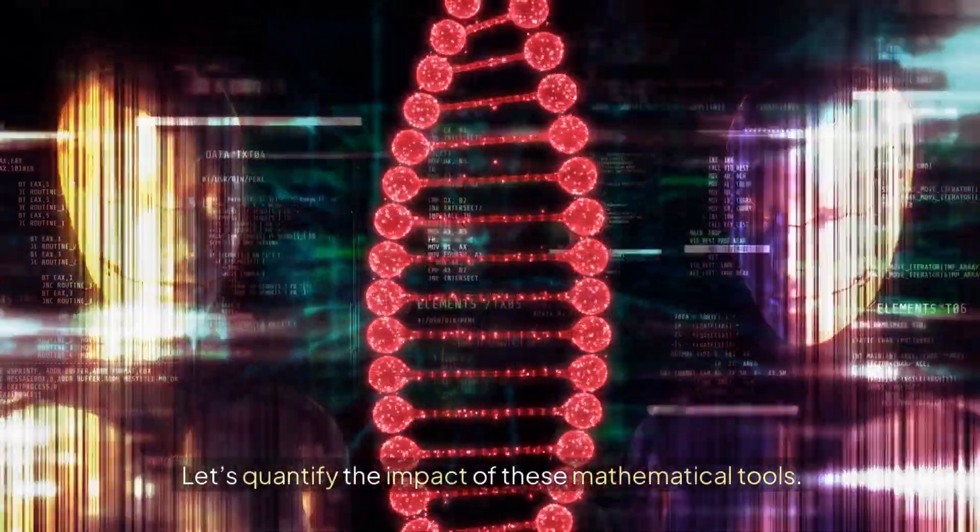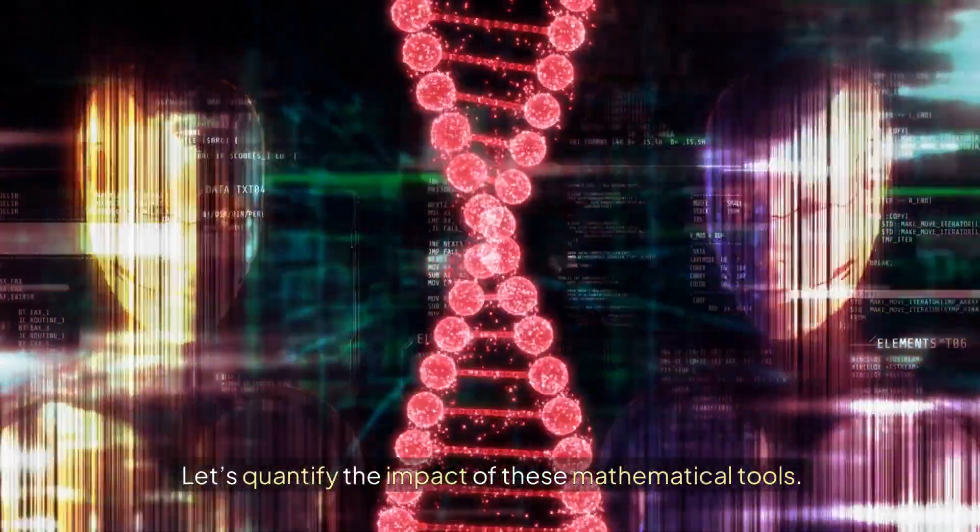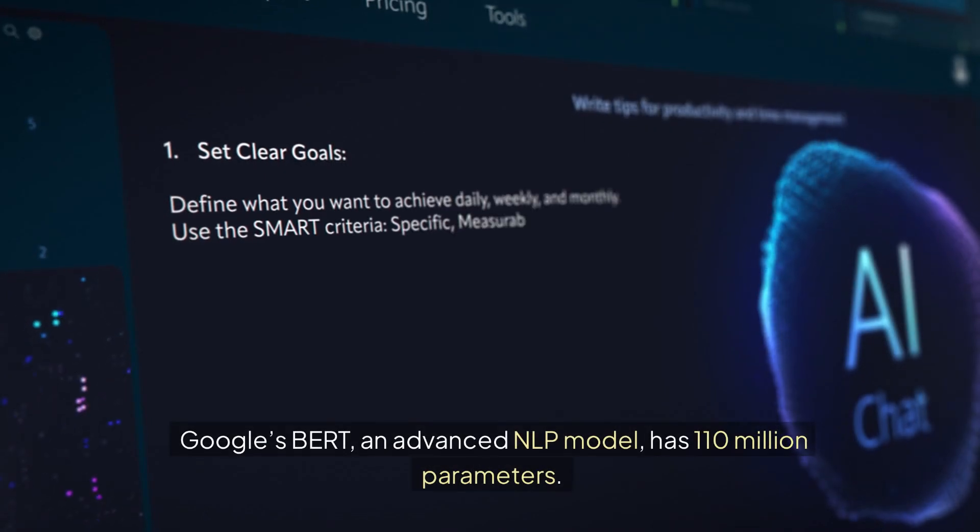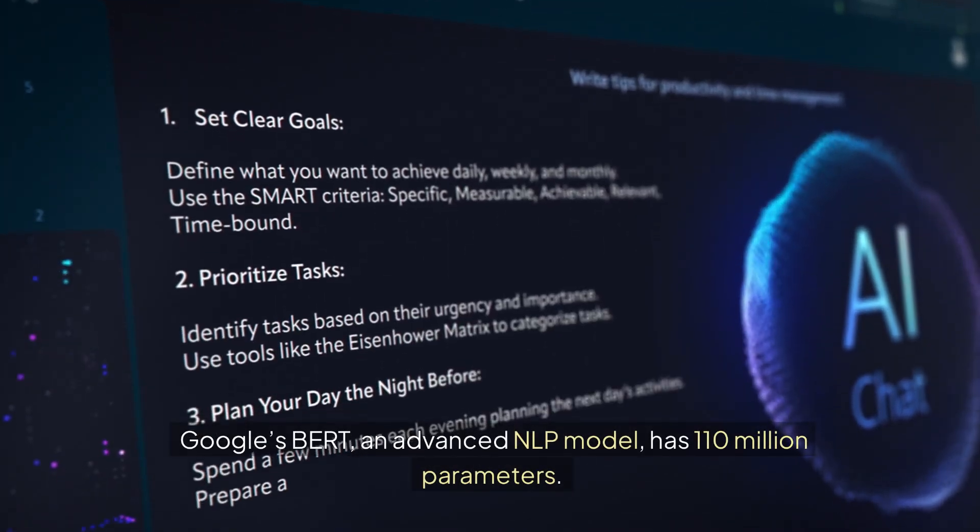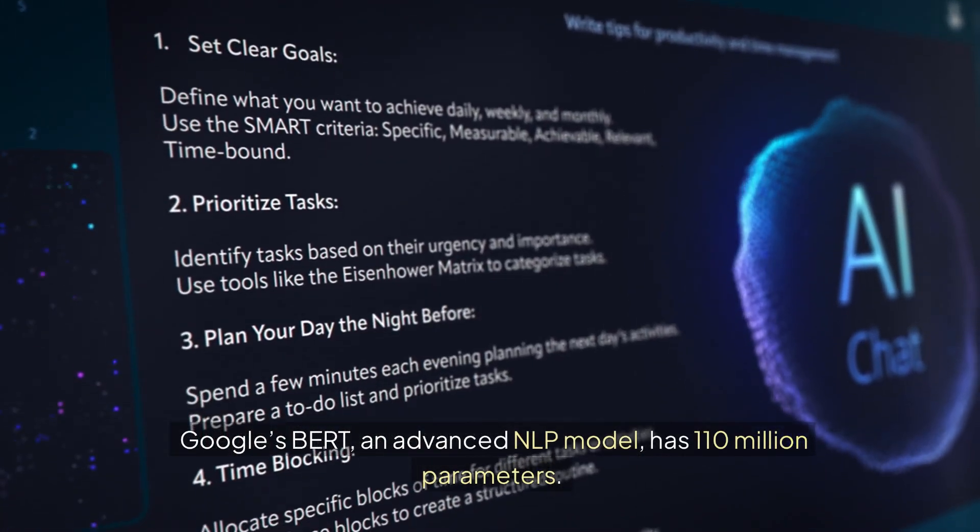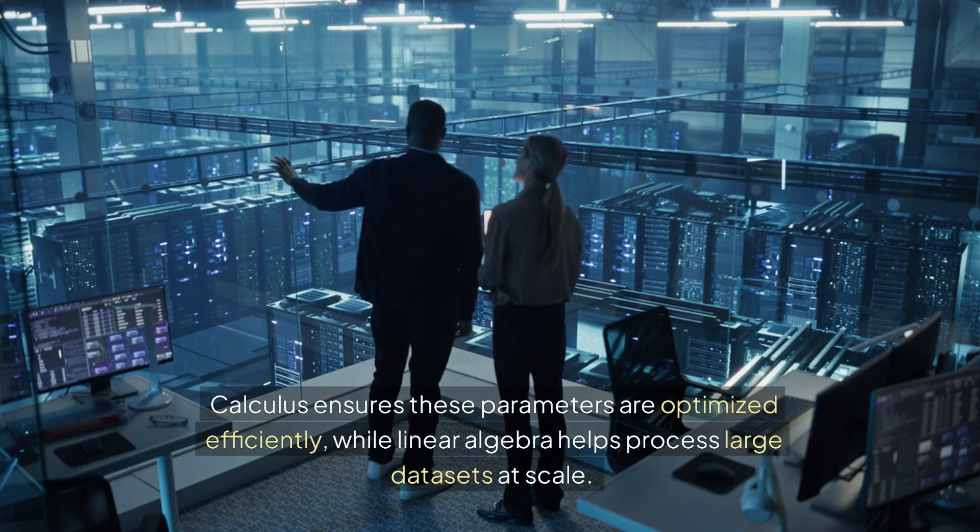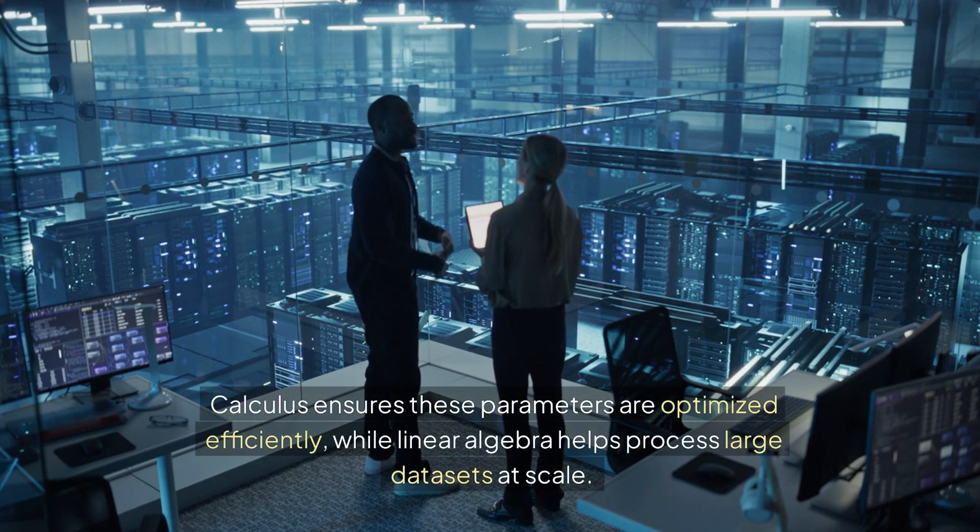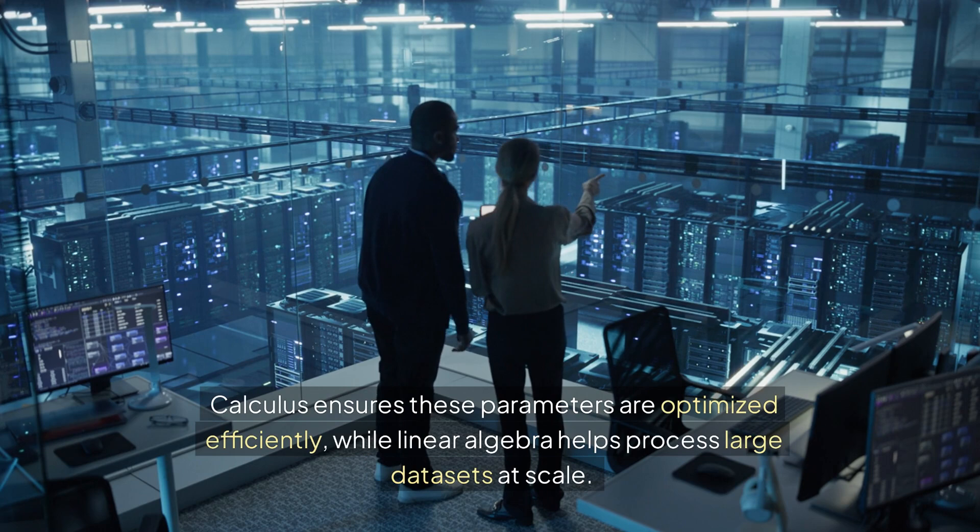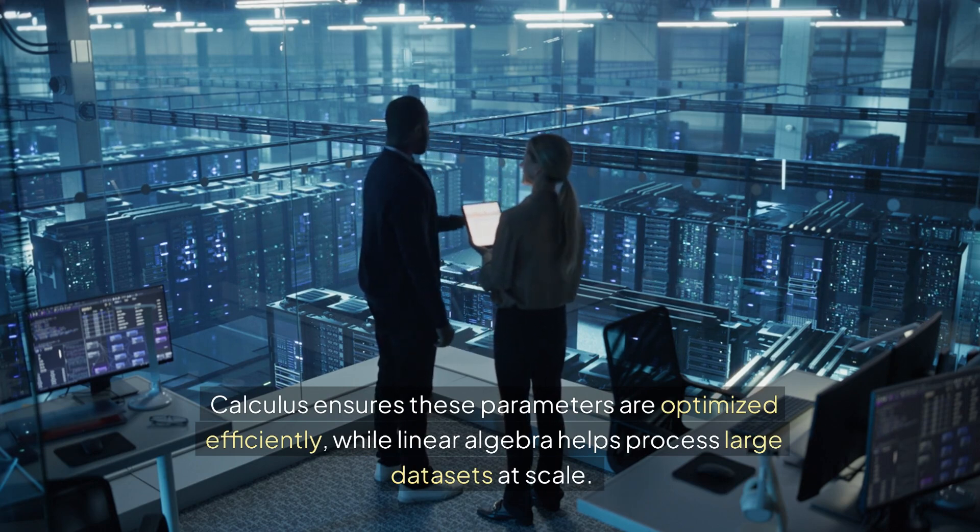Let's quantify the impact of these mathematical tools. Google's BERT, an advanced NLP model, has 110 million parameters. Calculus ensures these parameters are optimized efficiently, while linear algebra helps process large datasets at scale.